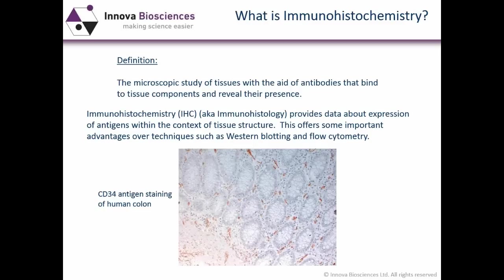Obviously, if your particular protein is only present within a subset of cells in the tissue you've processed, you're not going to know which cells it's present in. With flow cytometry, you are looking at whole cells, but you're looking at a cell suspension, so you're not looking at expression within the structure of the organ. As an example, CD34 staining in human colon shows that the stained structures are actually blood vessels and the endothelium of those blood vessels, while other structures within the colon are not stained.